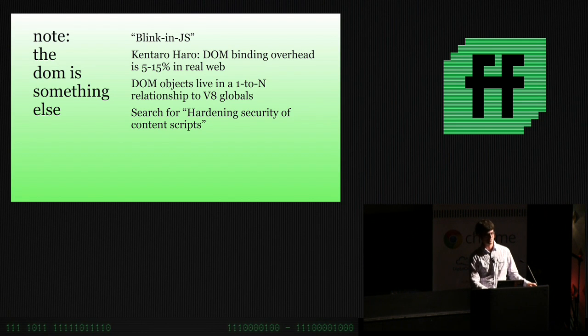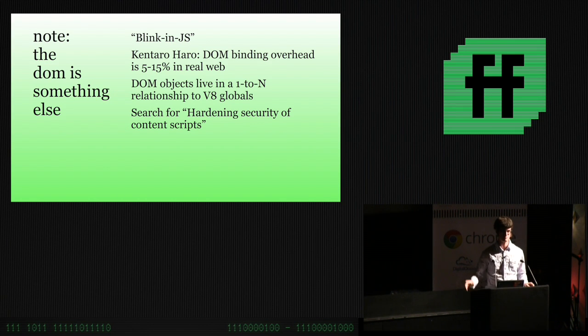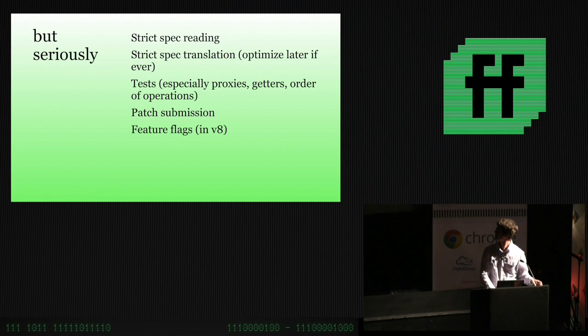I would note that the DOM unfortunately is something else. It exists in a very weird relationship to frames and globals. The same DOM object can present different faces. Y'all know more about this than me. I'm kind of ignorant on that side. But what I do know is it's different. There is an effort to do DOM features in JavaScript in Blink in Chrome. It's called Blink in JS. But it's got some different considerations. If you're interested, I would suggest Googling for this document, Hardening Security of Content Scripts by Kentaro Haro.